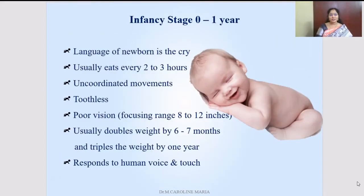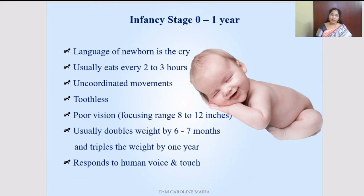The very first stage is infancy, from 0 to 1 year. For the newborn baby, the language is either crying or smiling — only those two activities the newborn baby can do. Then the child keeps learning everything from the mother through imitation. Usually the newborn baby eats every two to three hours, and you can see uncoordinated movements — they'll move their hands, legs, and nod their head. They remain toothless until they grow milk teeth by the 8th or 9th month.